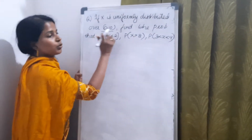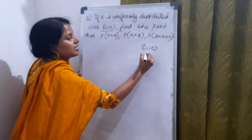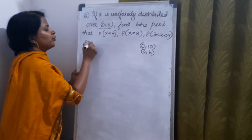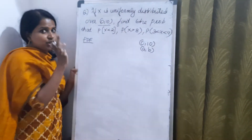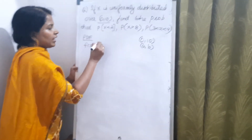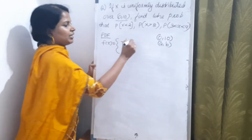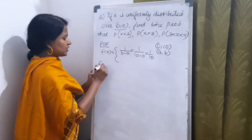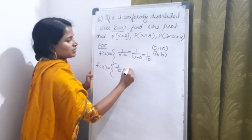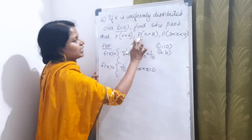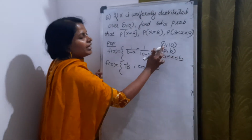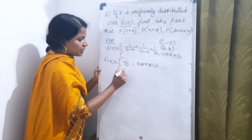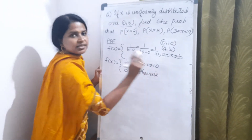Here the interval is 0 to 10, which is the interval a to b. First we write the PDF of uniform distribution — the probability density function. It is denoted as f(x) and the formula is 1/(b − a). Here b − a is 10 − 0, so f(x) = 1/10 for 0 ≤ x ≤ 10, and f(x) = 0 otherwise.